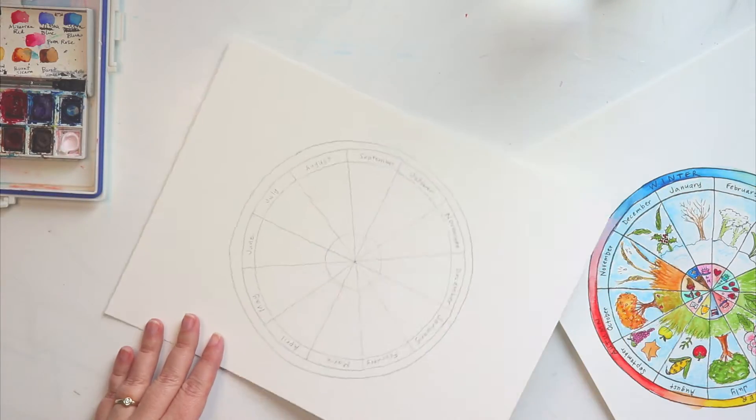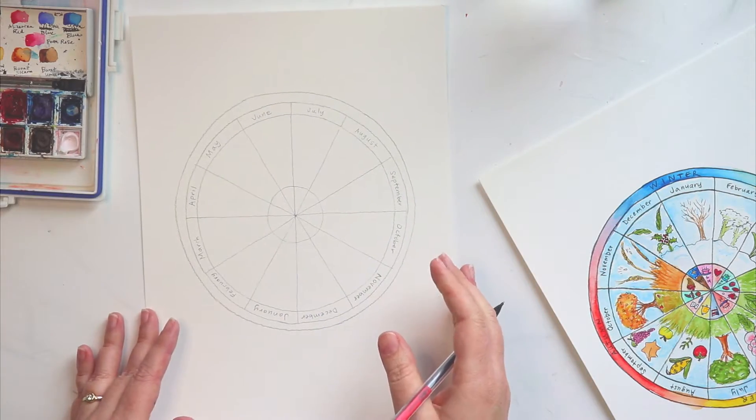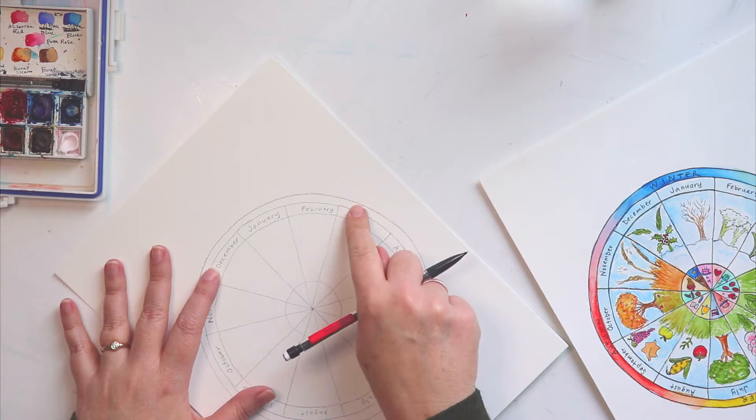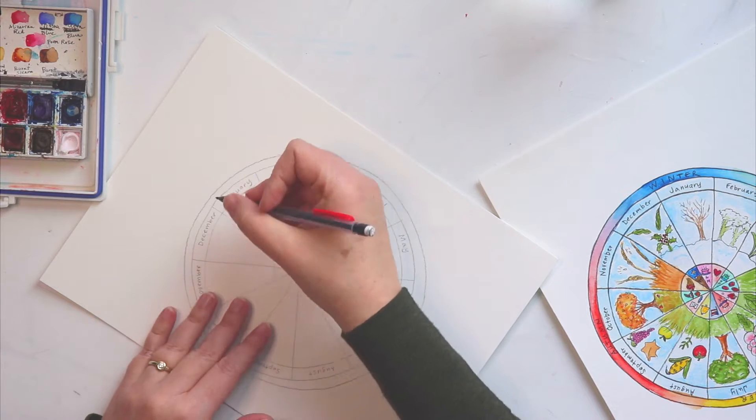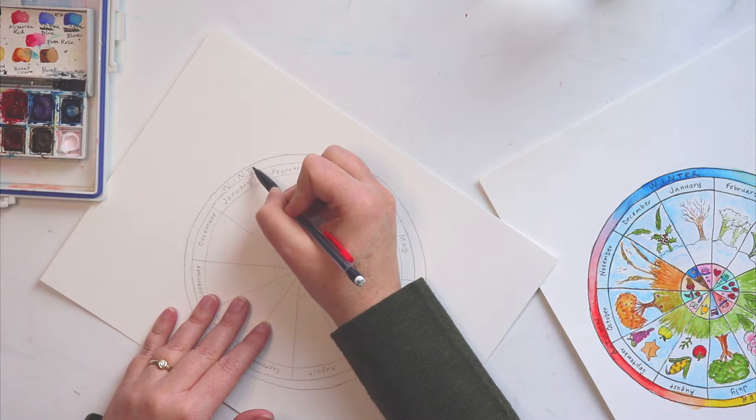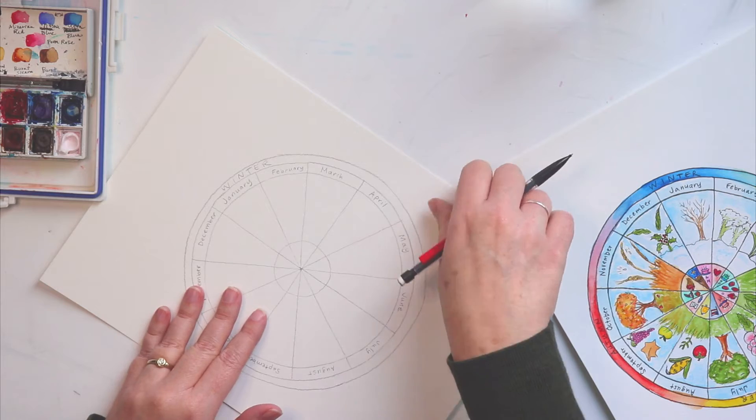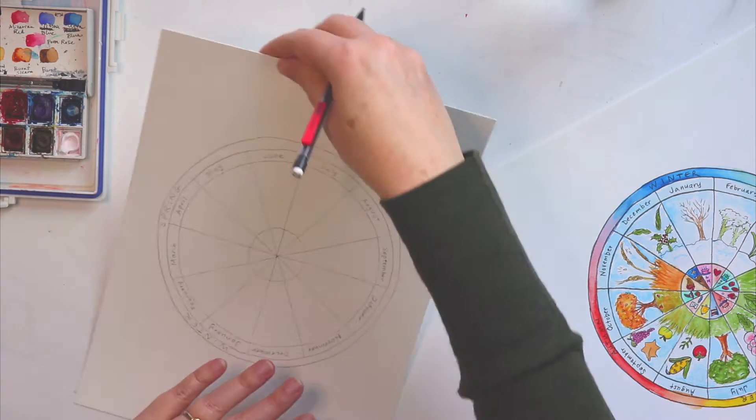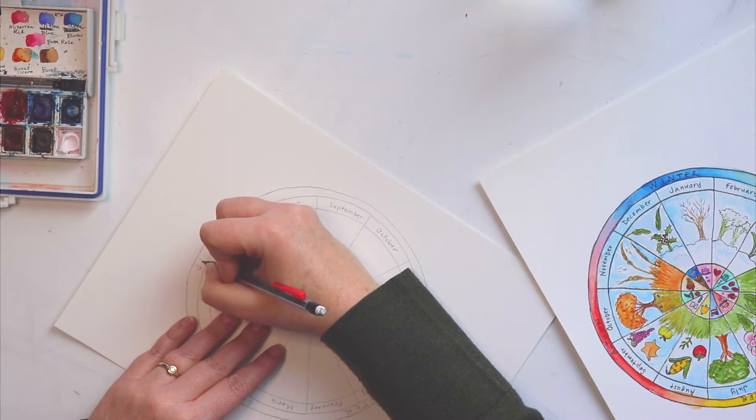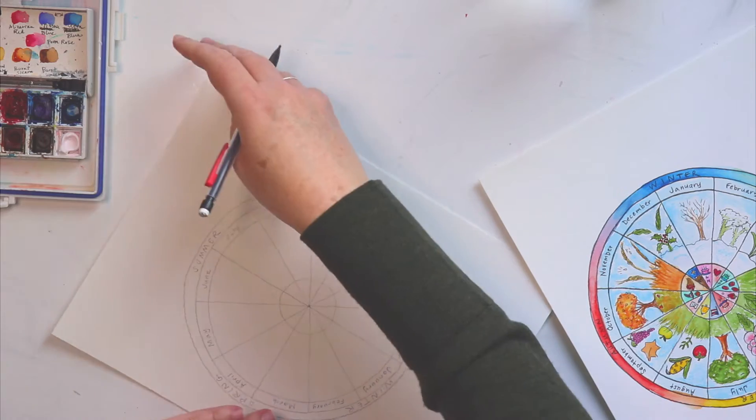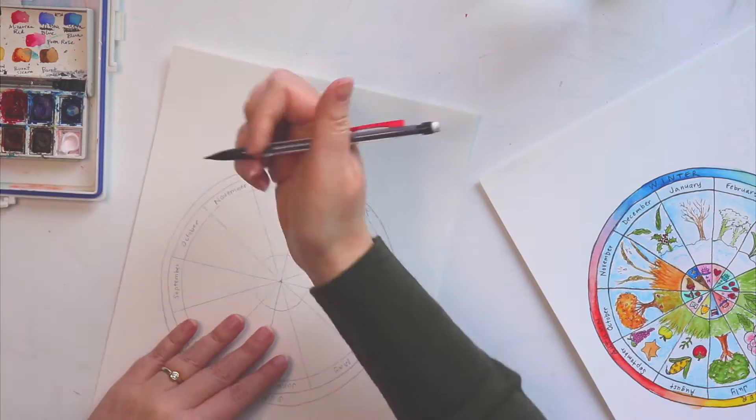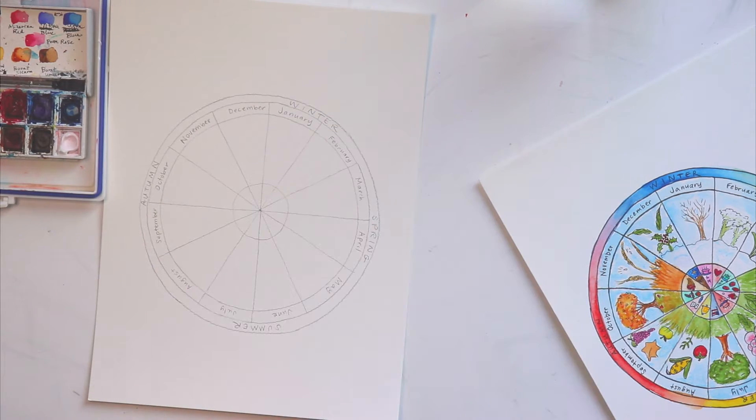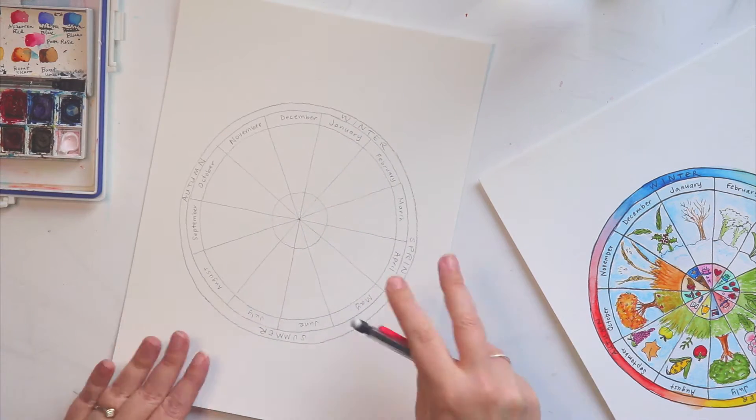And then once I've done my months, I'm going to add the seasons. So I know that winter starts in December and ends in March, beginning of March. So I'm just going to put winter right here over my January into my February. And then I'm going to do spring. We know that starts in March and goes April, May, and then June, summer solstice starts mid June. So we'll put summer over June and then our autumn. We'll put that right over November. So we've got that all done.